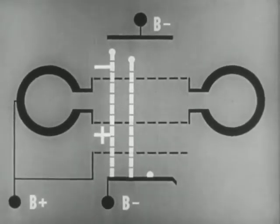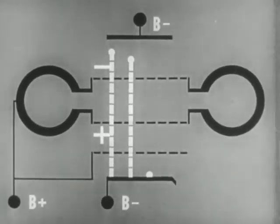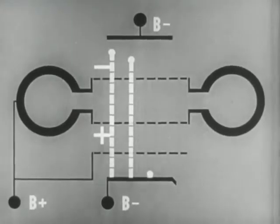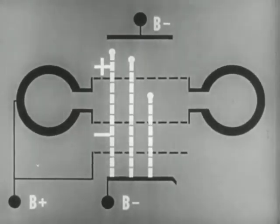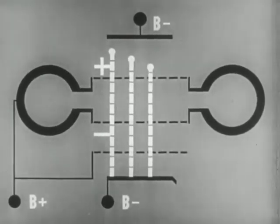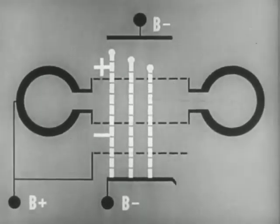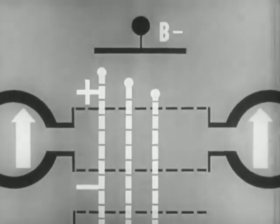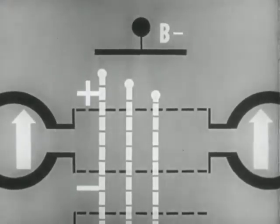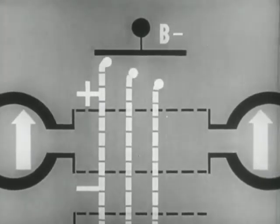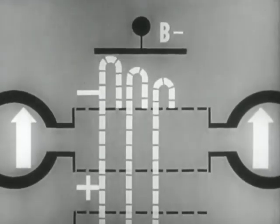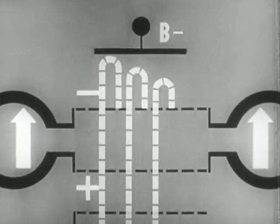The third electron, leaving the cathode still later, reaches the buncher grids when the bunching voltage is maximum decelerating, so it goes only a short distance toward the repeller before being turned back. Since the first and second electrons will have to travel farther than the third to return to the buncher grids, the net result is that they will all return at approximately the same time. This is what is known as bunching.